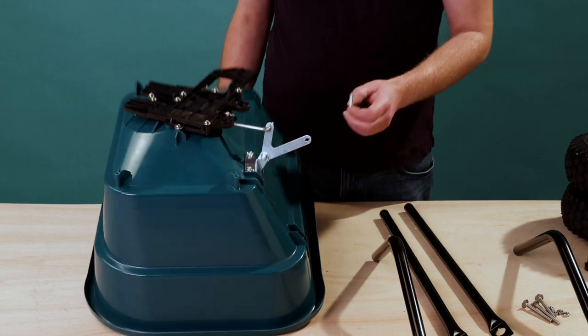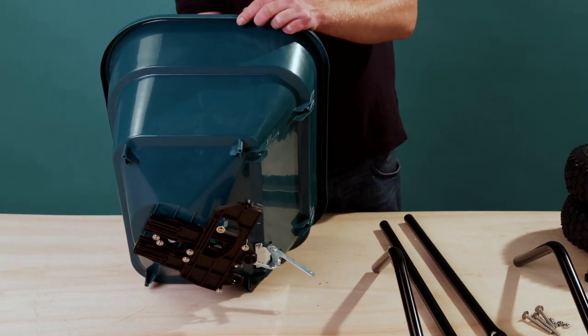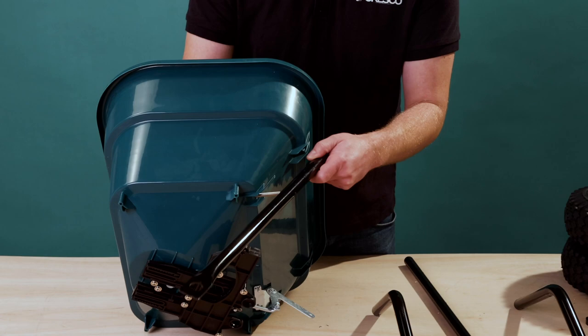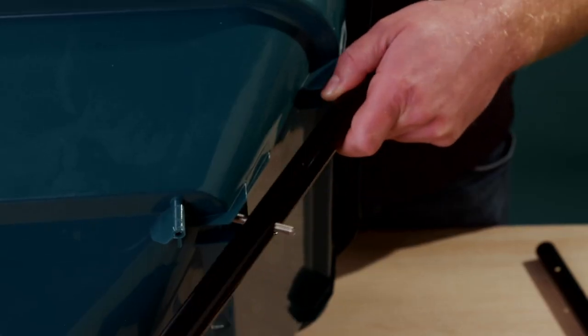When placing the legs on the hopper, make sure the two holes on the side of the lower frame are on the outside. There should be one hole on the inside.